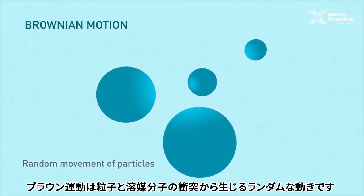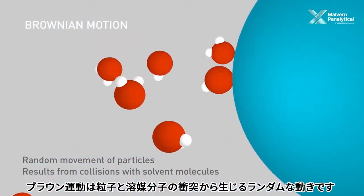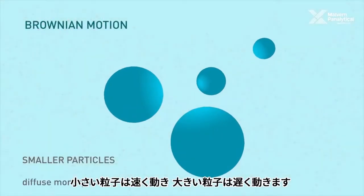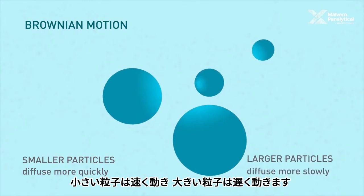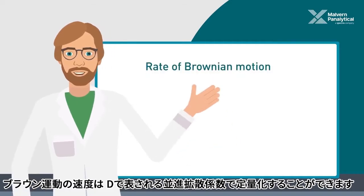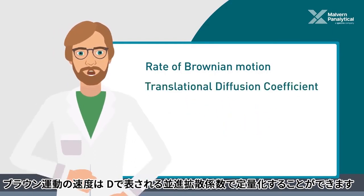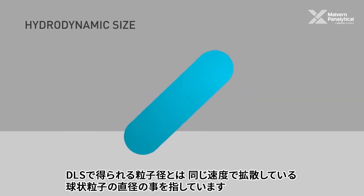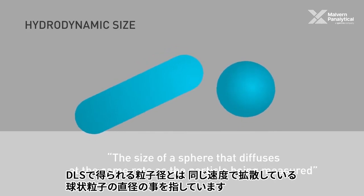Brownian motion is the random movement of particles which results from their collision with solvent molecules such as water. Smaller particles move or diffuse more quickly, and larger particles diffuse more slowly. The rate of Brownian motion is quantified as the translational diffusion coefficient, which is often represented by a capital D. The hydrodynamic size measured by DLS is defined as the size of a sphere that diffuses at the same rate as the particle being measured.